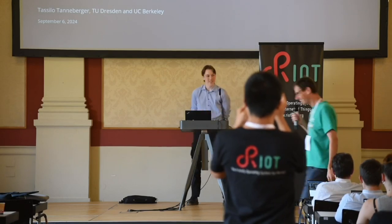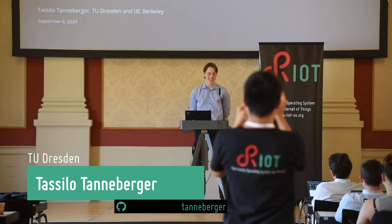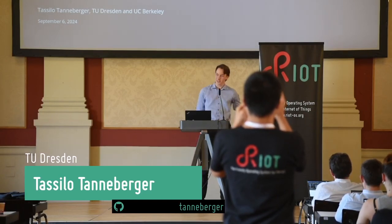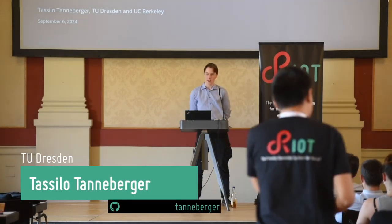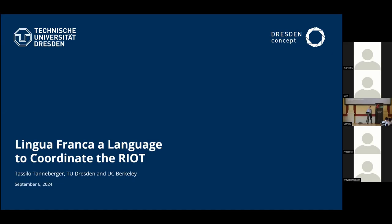My name is Tasselow Tannenberger. I'm a student in Dresden and also affiliated with UC Berkeley. The routing security stuff is things I did with Matthias, but this work is under Geronimo Castrion, the compiler construction chair in Dresden. This relates quite heavily to the time synchronization we talked about previously, but also to concurrency and parallelism in general. I want to explain how good timing information can lead to a very nice execution model that is potentially interesting for Riot.